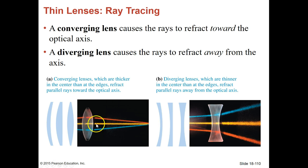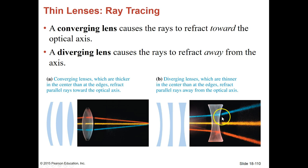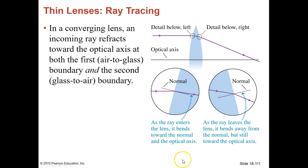Converging lenses are thicker at the center than they are on the edges, so we call this a double convex lens because it's got an outward bow on each side. Diverging lenses are different — they bend light away from the source, and we call these double concave, because they are concave on each side. In converging lenses, the incoming ray refracts towards the optical axis at both the first air-to-glass boundary and at the second glass-to-air boundary.